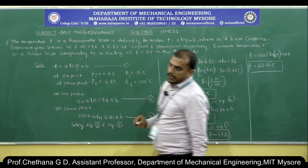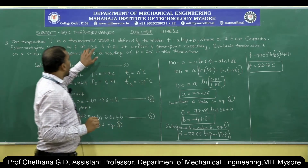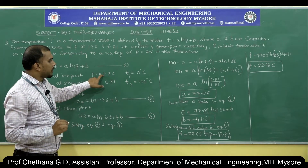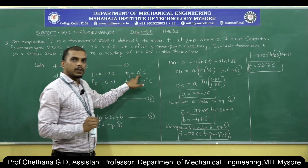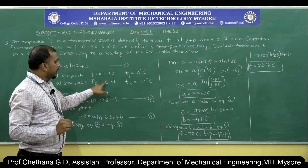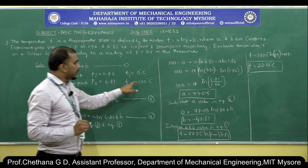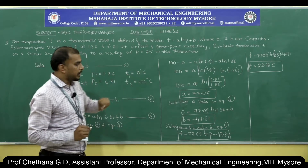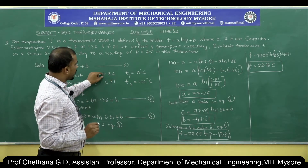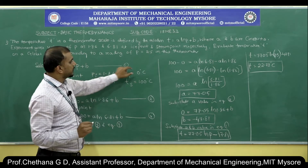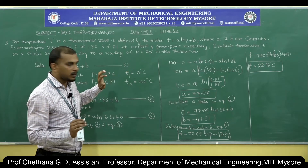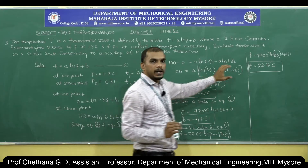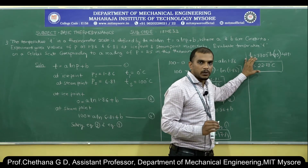We can verify this result. The thermometric property is 1.86 at 0°C and 6.81 at 100°C. Now at p = 2.5, which is between 1.86 and 6.81, the temperature should be between 0 and 100°C. Our answer of 22.78°C is consistent with that, so the answer looks correct.